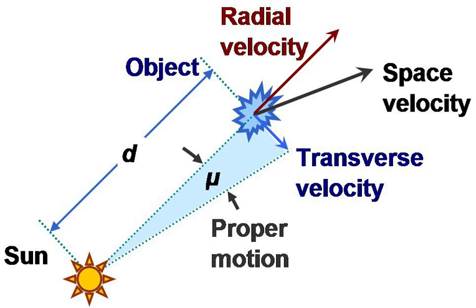Coupled with measurements of the star's radial velocities, proper motions can be used to compute the distance to the cluster.